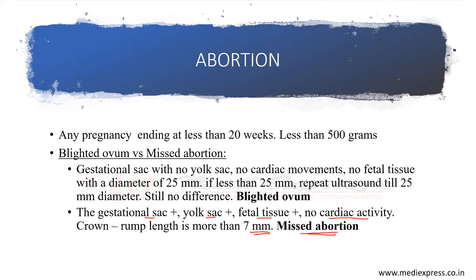Blighted ovum is a condition where a gestational sac is present, but there is no yolk sac, no cardiac movement, and no fetal tissue, with a diameter of 25 mm. If a lady comes with less than 25 mm with all these features — gestational sac present, no yolk sac, no cardiac movement, no fetal tissue — we have to repeat the ultrasound until the gestational sac attains 25 mm. Even after 25 mm, if we still do not find any difference, then we term it a blighted ovum.